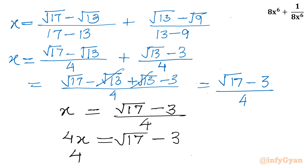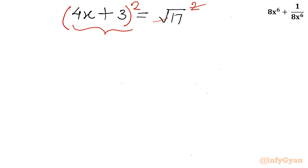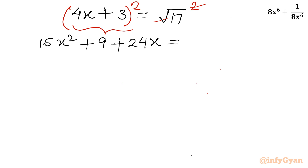Adding 3 to both sides: 4x + 3 = √17. Now I will square both sides. Applying (a + b)² on the left: a² gives 16x², b² gives 9, and 2ab gives 24x. The right-hand side is simply 17.